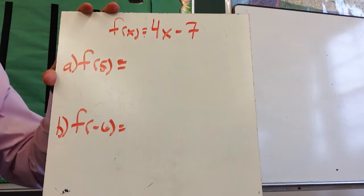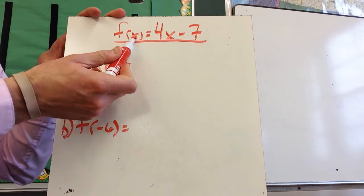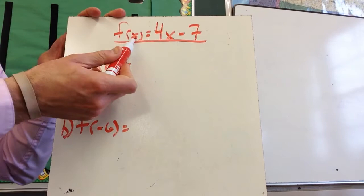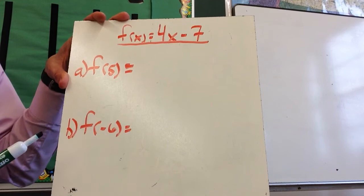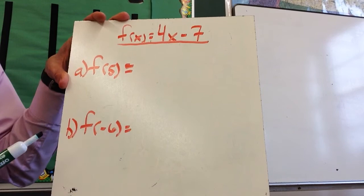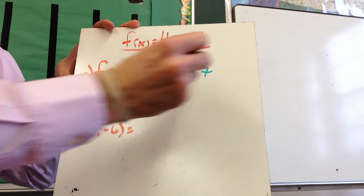And so this is a little bit, at times people kind of feel like this is a funky notation. This is f of x equals 4x minus 7. That's the way you say it, f of x equals 4x minus 7. So the first problem, problem a, is f of 5. And so all I'm going to do is take this, what this is asking me to do is substitute 5 wherever I see x. So this becomes 4 times 5 minus 7. That's 20 minus 7. So f of 5 is 13.